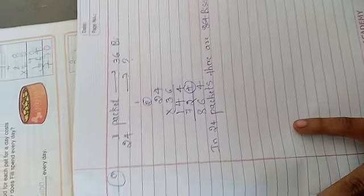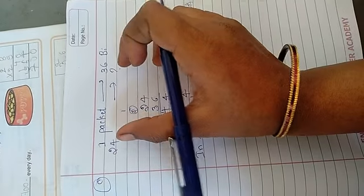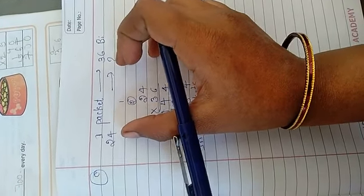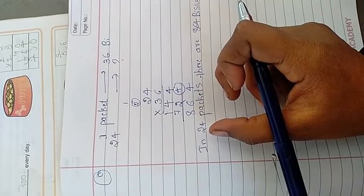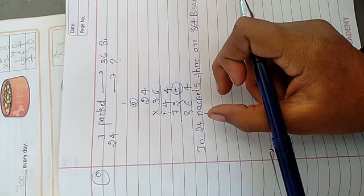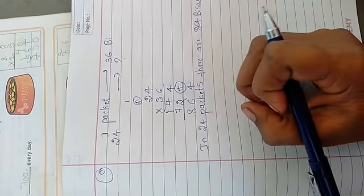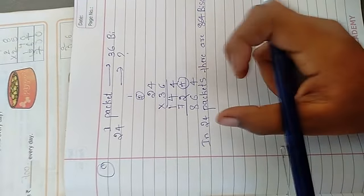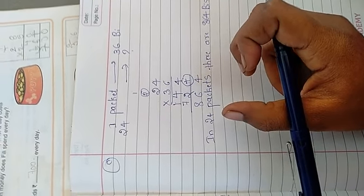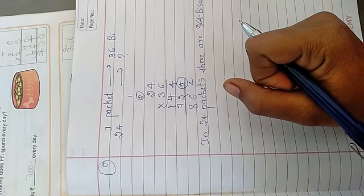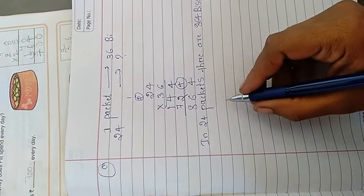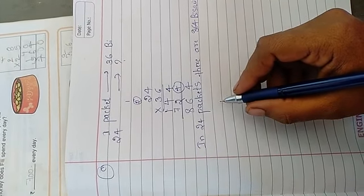See, the story problems are very easy. Just write the values, data, what they have given properly. Then, do multiplication. If you want to do multiplication, you should be very good in the tables. At least up to 2 to 10, you should be perfect. So, memorize the tables properly. Then only you can do this lesson, multiplication lesson properly. This completes your syllabus. I hope it is clear. Thank you.